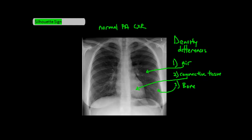All of these lines and borders that we see on X-rays are the result of different densities being next to each other. For example, bone next to air, bone next to connective tissue, or connective tissue next to air.